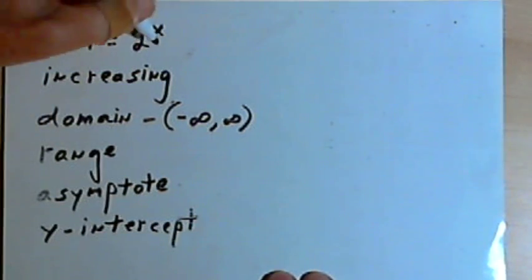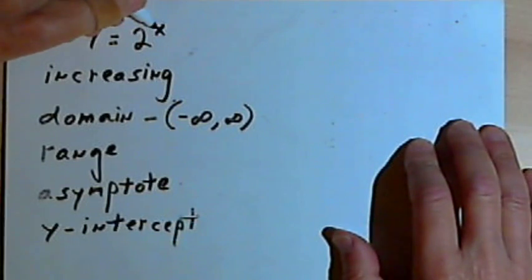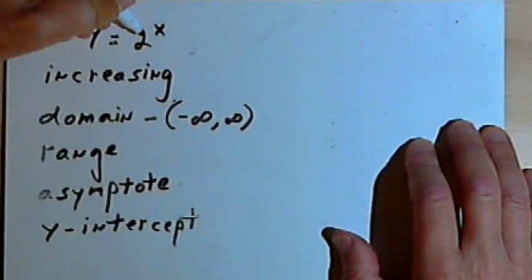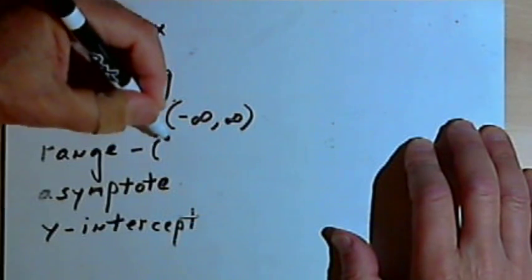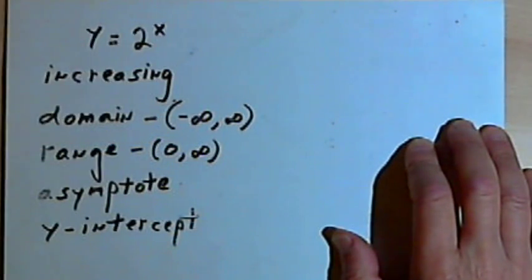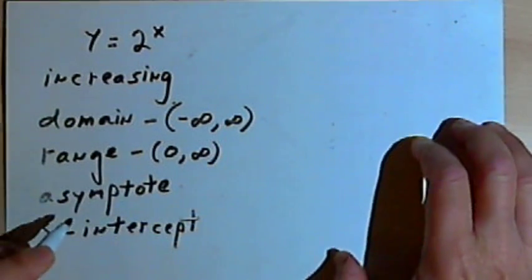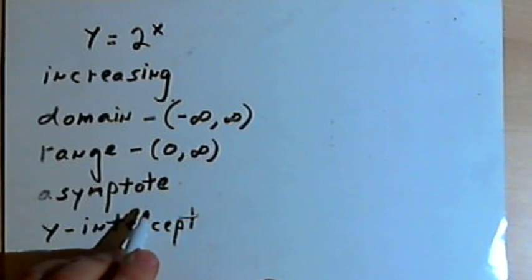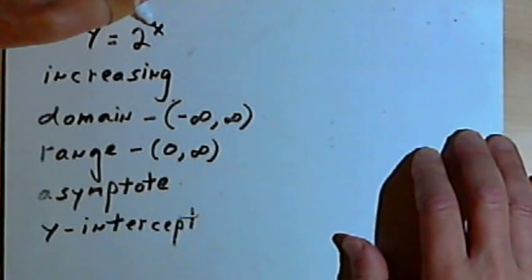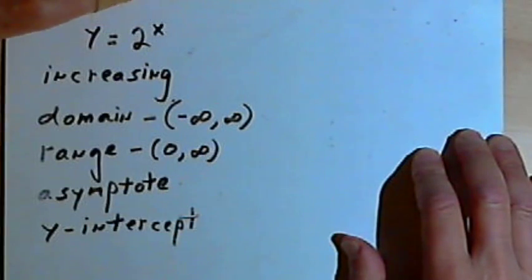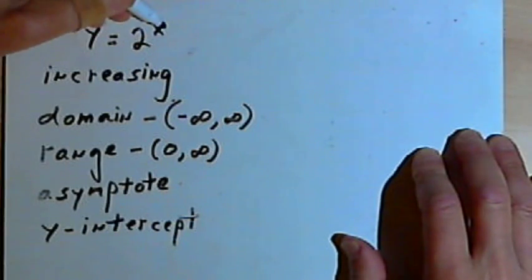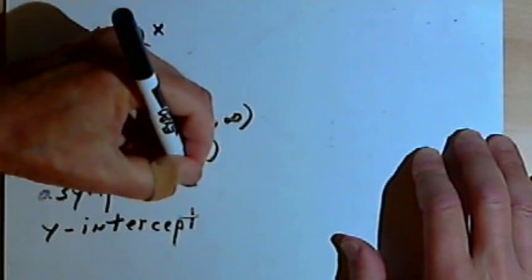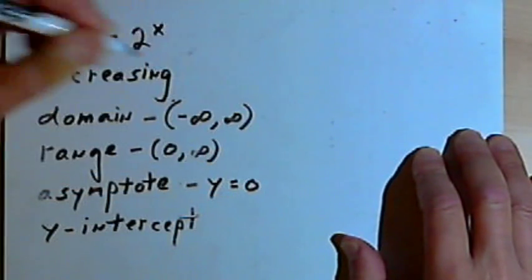What about the range? Well, no matter what number I use for x, I can never make 2 to the x equal zero or anything negative. It can get very small, but it will never be zero or negative. So the range is going to be from zero up to positive infinity. As x gets more and more negative, as the graph moves further and further to the left, we're going to have a smaller and smaller value for 2 to the x. So the asymptote is going to be at y equals zero.